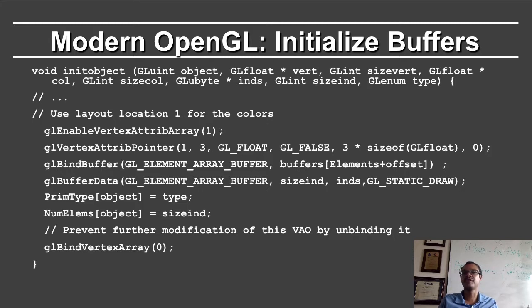Binding the buffer for the elements and the indices now, reading in that buffer data. Finally, we set the primitive type for the object to the type that is input, and the number of elements for the object to the size of the indices array. Once you have done with this vertex array object, you can unbind it to prevent unwanted modifications later. So you should always, as a best practice, bind 0 in order to unbind the current vertex array object.